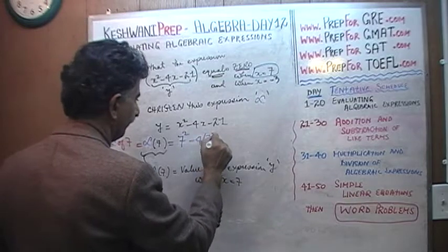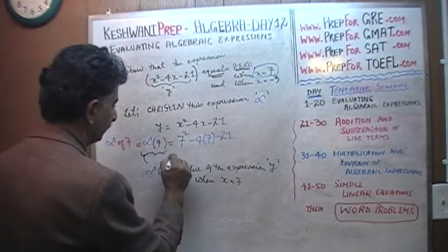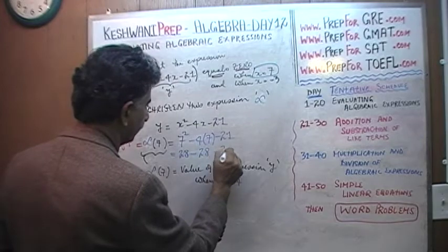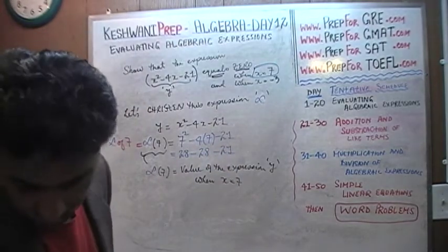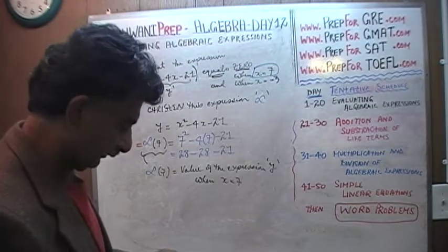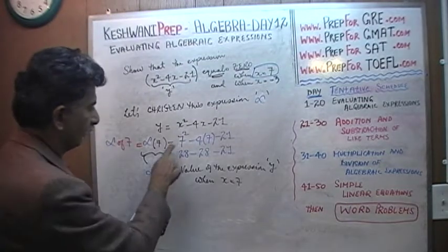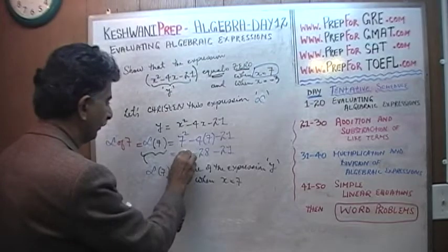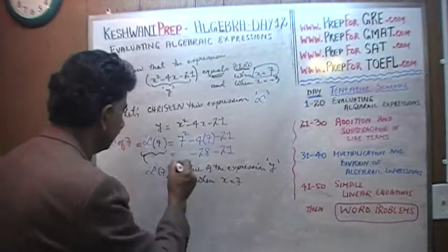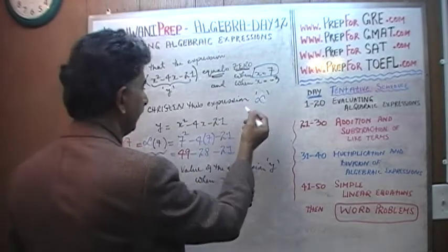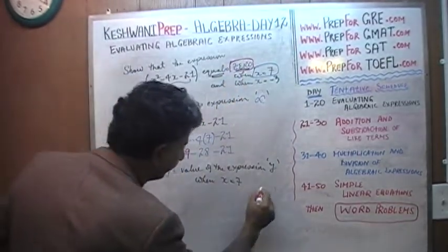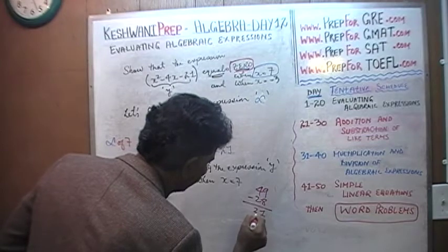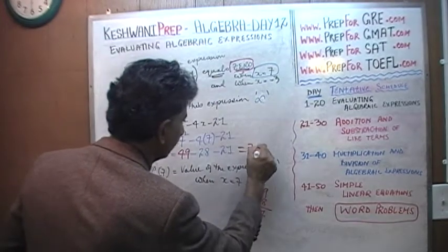You substitute — wherever we see x, we substitute 7. So it becomes 7 squared minus 4 times 7 minus 21. 7 squared is 49 — not 28, which would be wrong. So it's 49 minus 28, which gives us 21, minus 21, which gives us 0. Voilà — we just showed it.